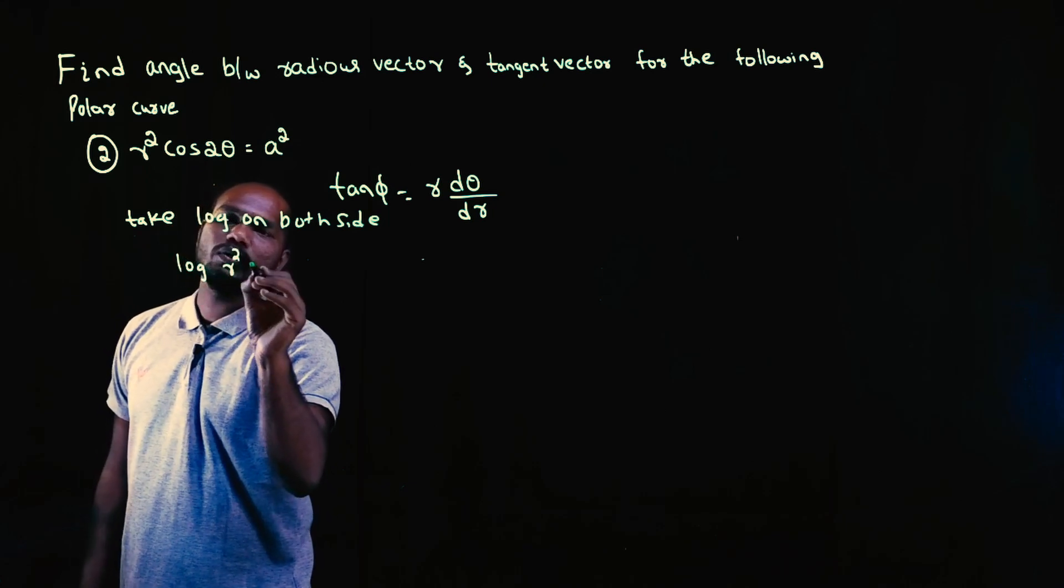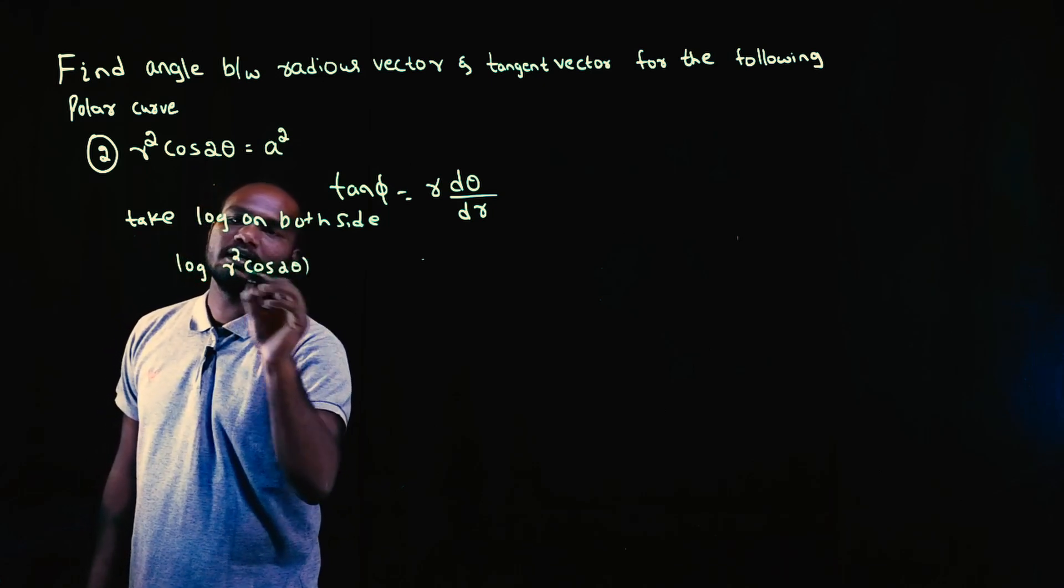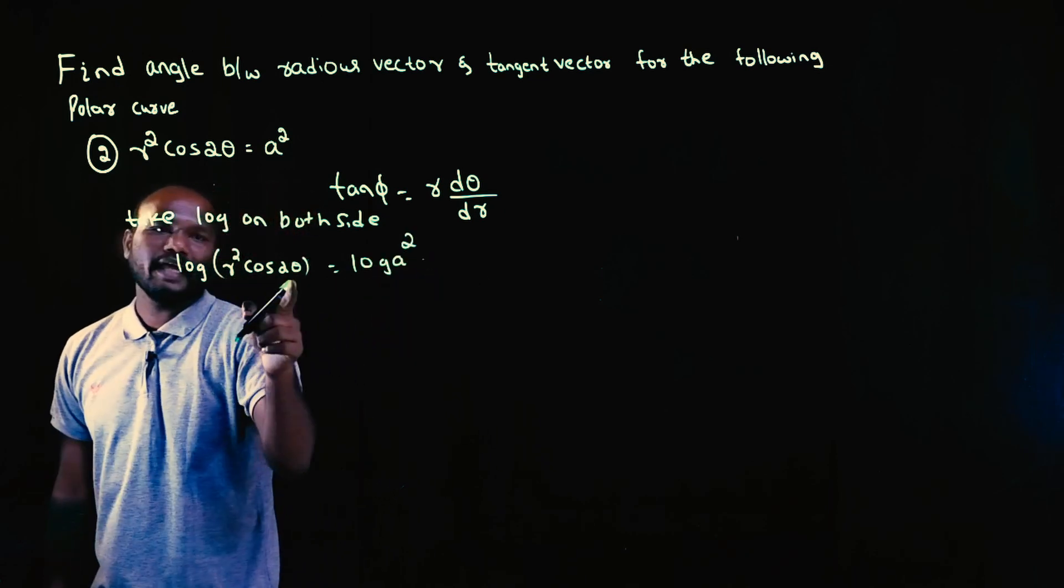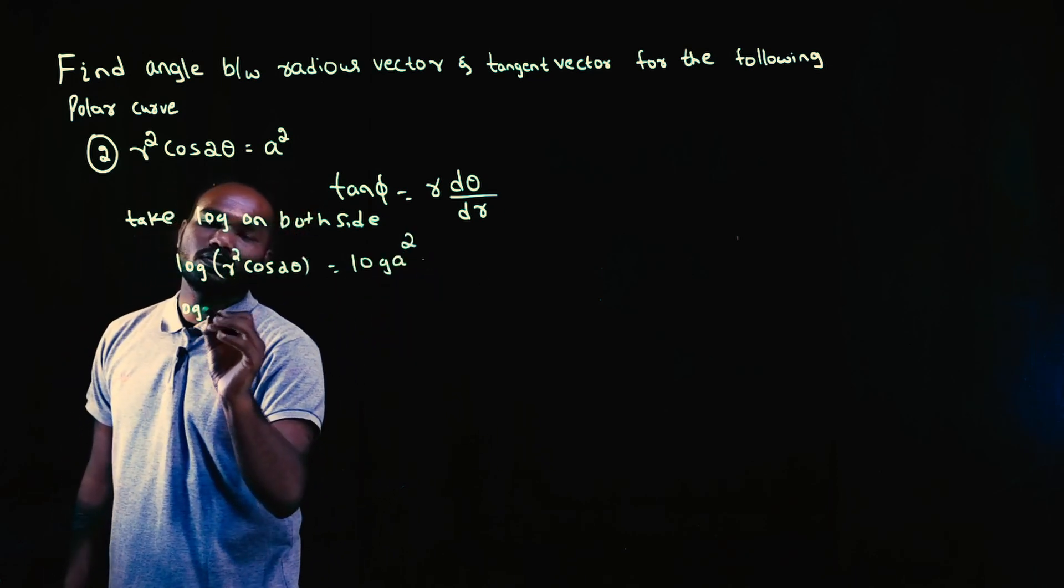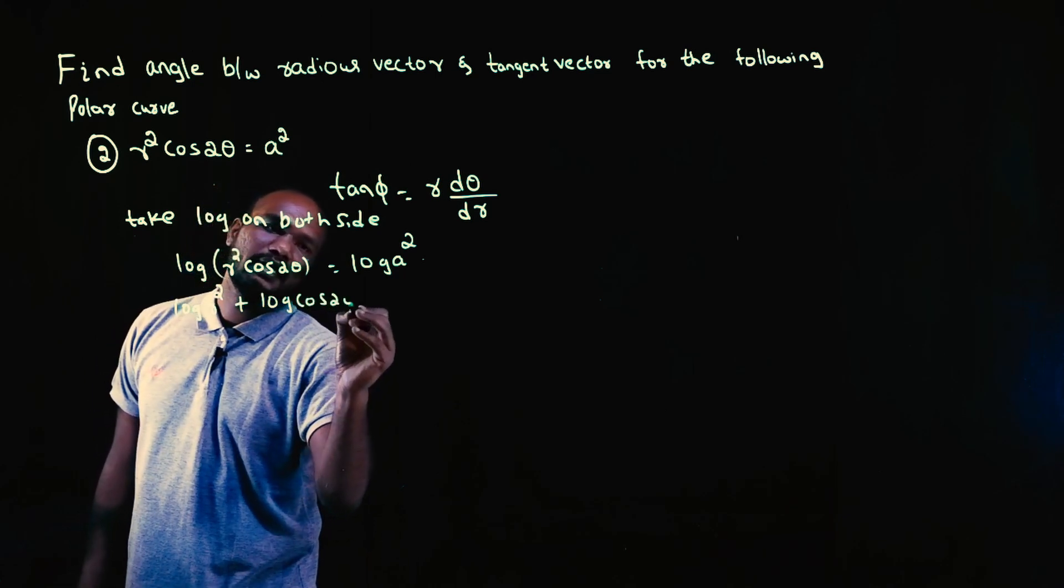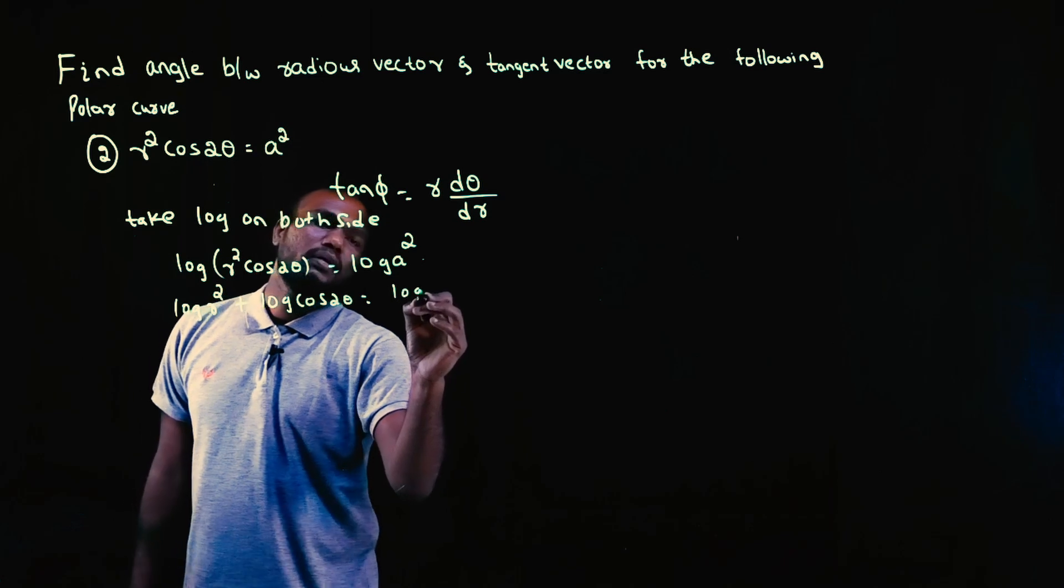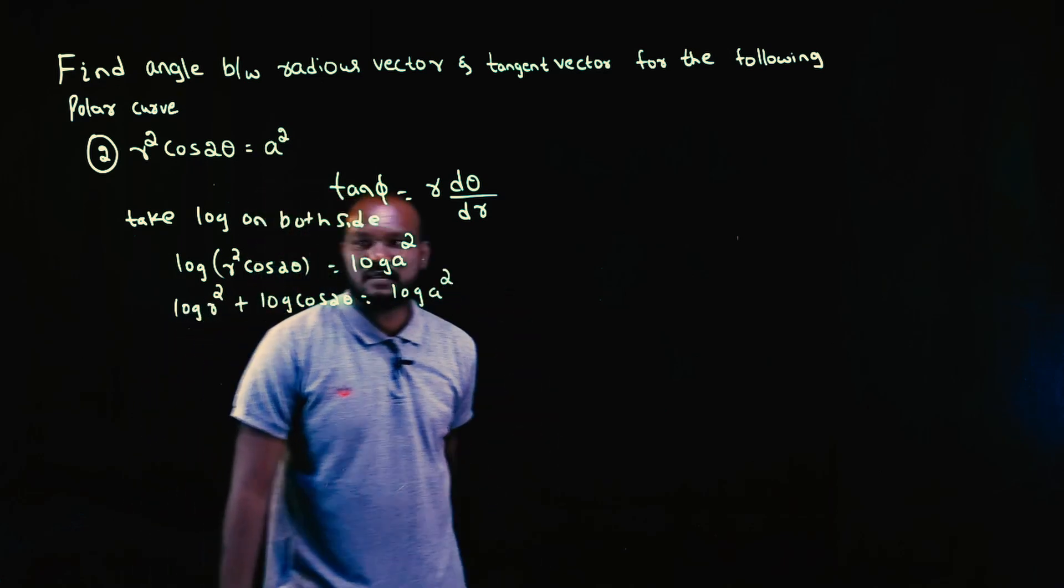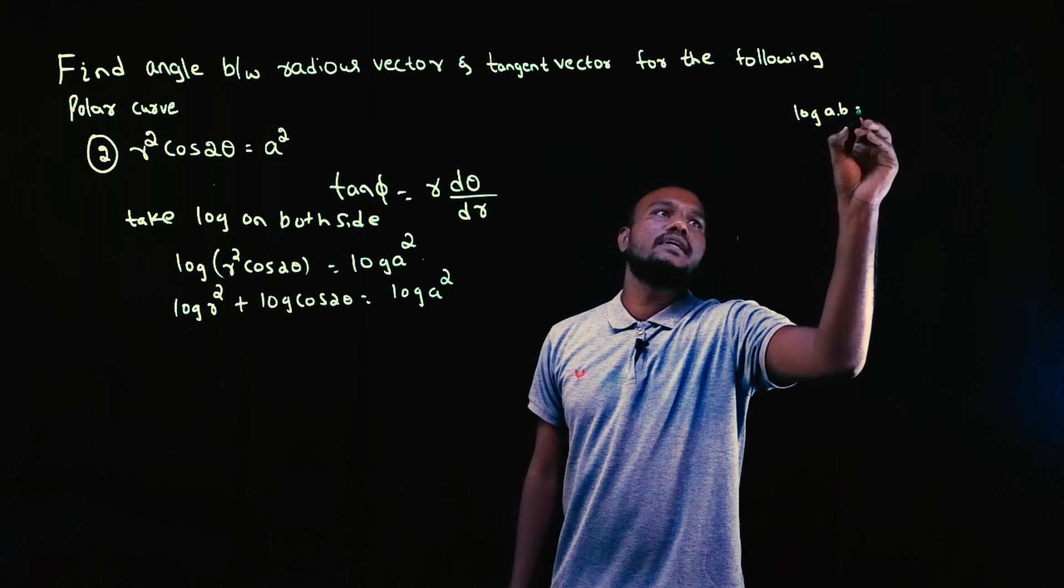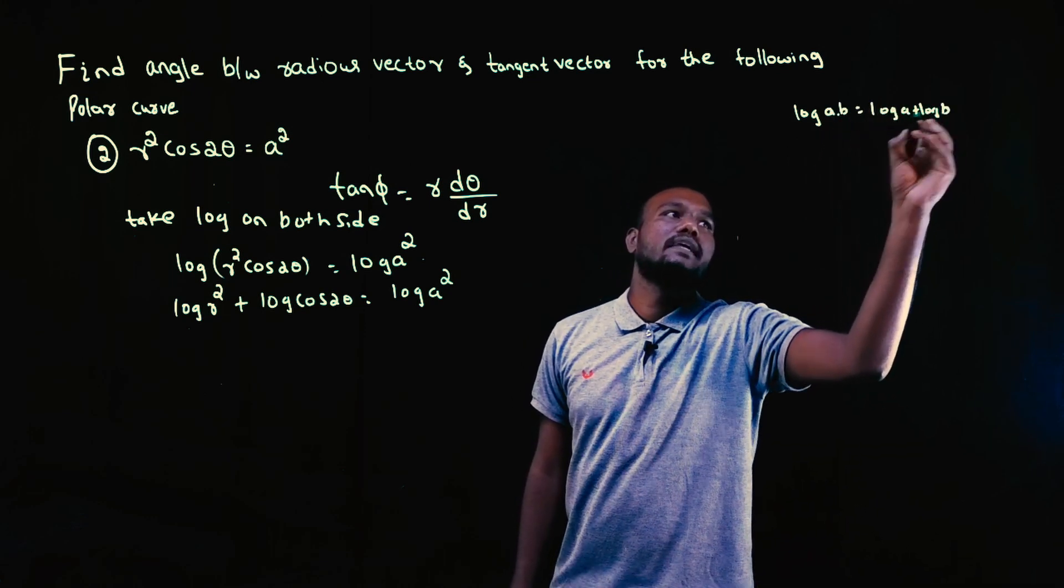So log(r² cos 2θ) equals log(a²). Log(a·b) is log(a) + log(b). So log(r²) + log(cos 2θ) equals log(a²).